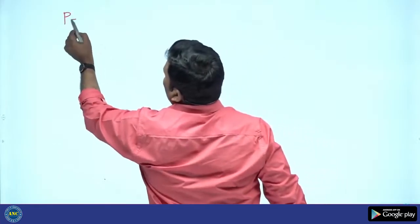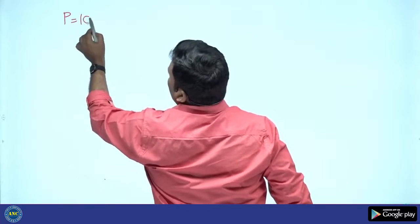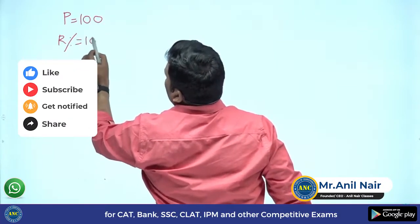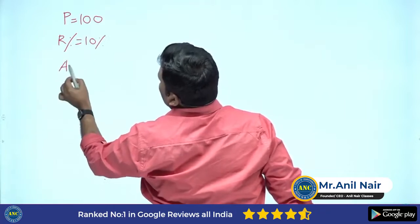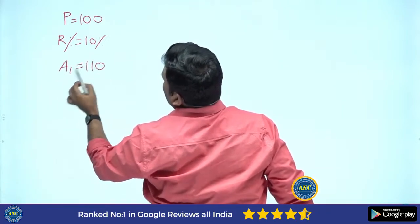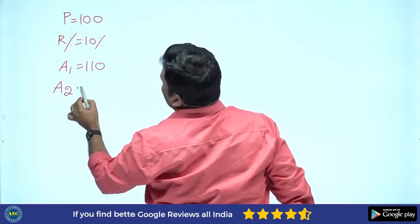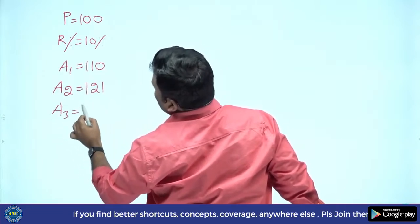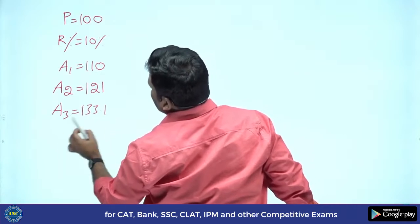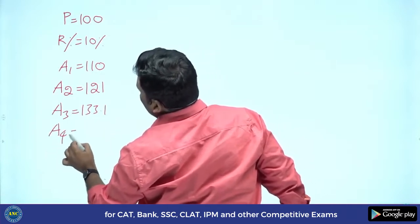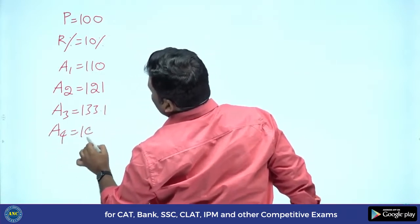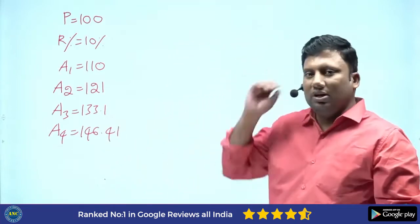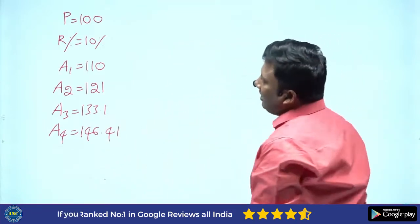Principle equivalent to 100, R is 10 percentage. Amount after first year is 110, amount after second year is 121, amount after third year is 133.1, amount after fourth year is 146.41. Now how does Pascal's triangle come into picture?